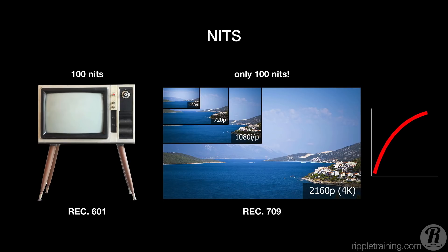We've migrated from cathode ray tubes, or CRTs, to large HD and UHD flat panel displays capable of displaying much greater brightness values. But so far, we haven't been able to take advantage of this expanded range, because the Rec. 709 standard sticks to this conventional gamma curve. So while we have moved from SD to HD and now to UHD, we've been stuck with standard dynamic range, or SDR.